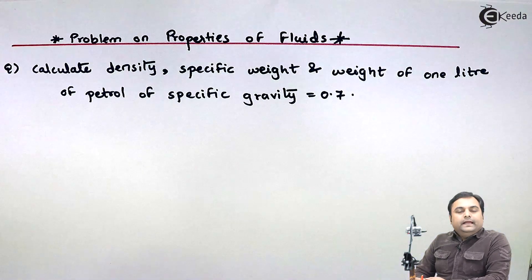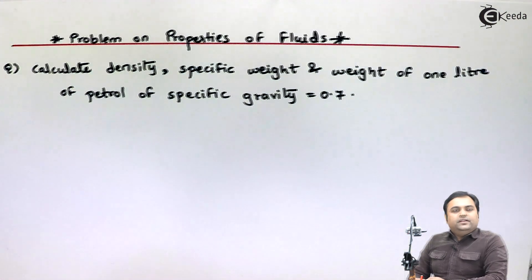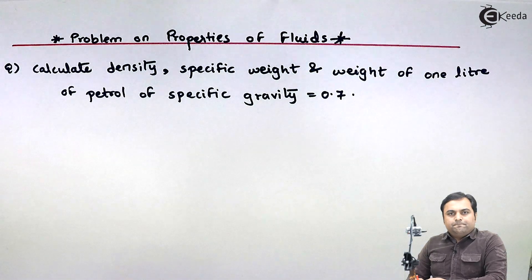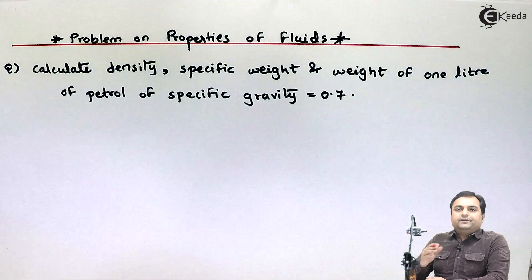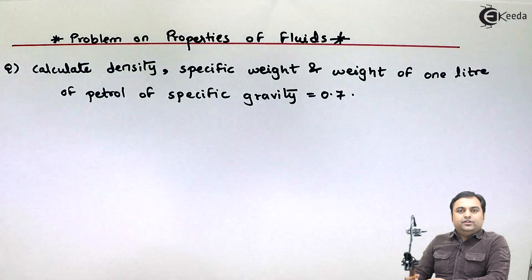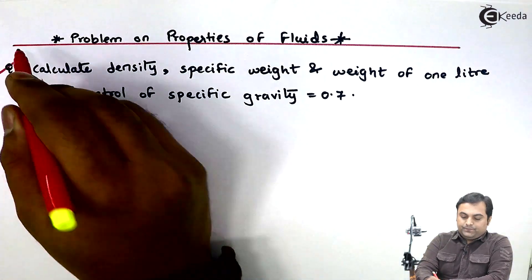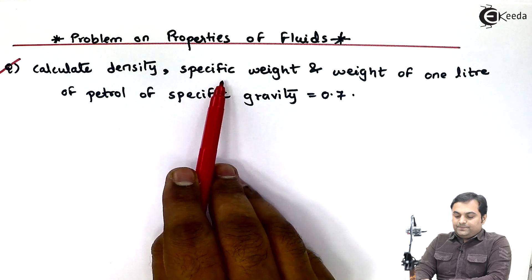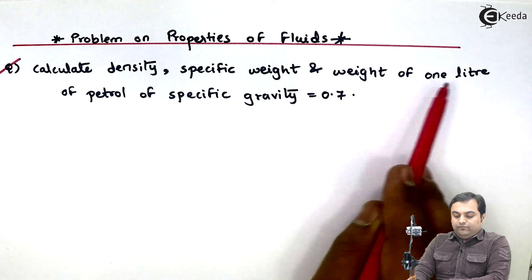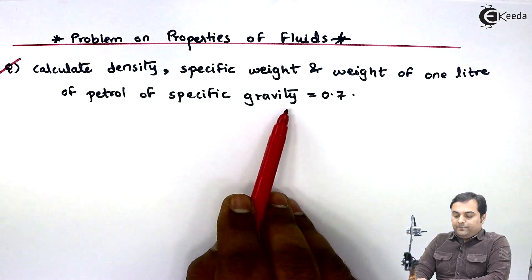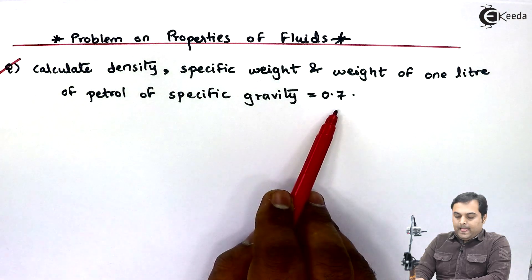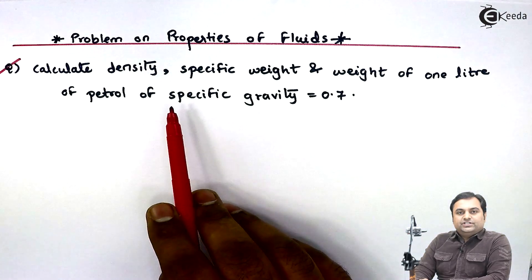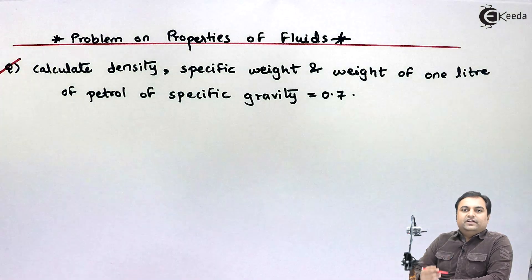Hello friends, let us see in this video a problem based on properties of fluid. We have a question in front of us: calculate density, specific weight, and weight of 1 liter of petrol of specific gravity 0.7. Whatever is given in this question and whatever is asked, I will write in the form of data.